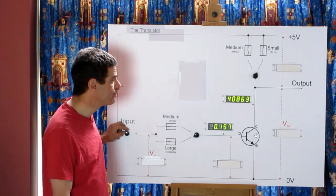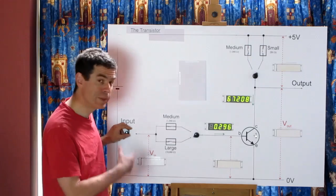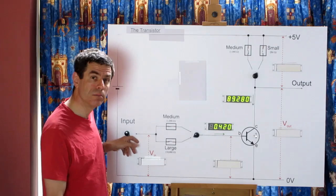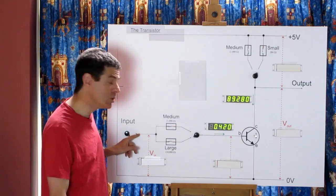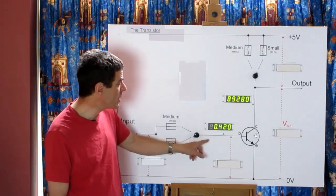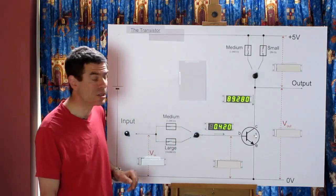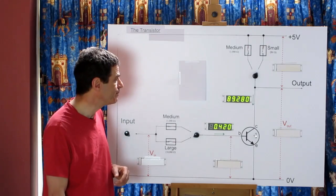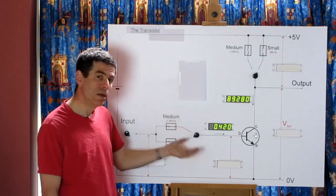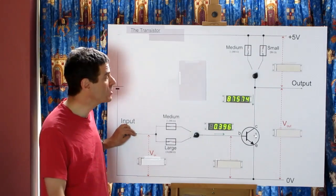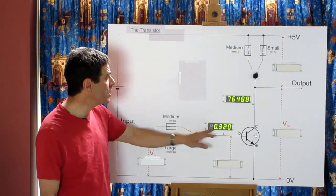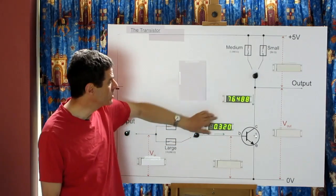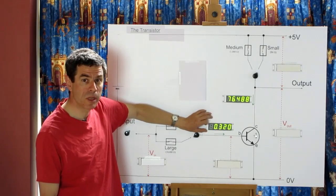It continues like this for this particular circuit until I get to the maximum the control input can reach. At this point we have round about half a milliamp going into the base of the transistor and round about 90 milliamps going into the collector. Winding back the control is the same but backwards — decreasing current into the base, decreasing current into the collector — the collector current stays roughly speaking a few hundred times larger than the base current.